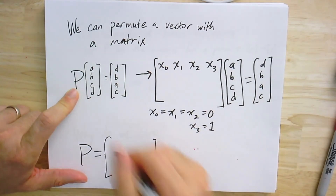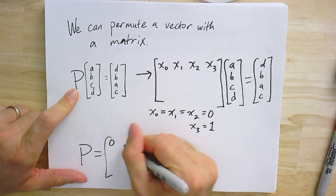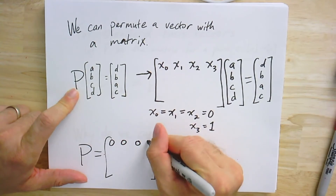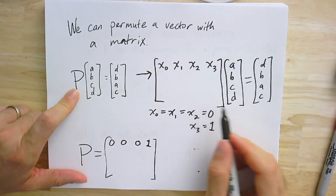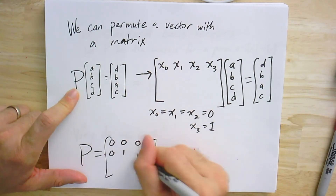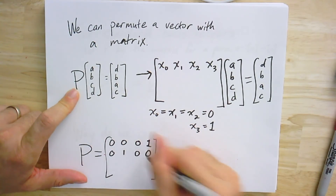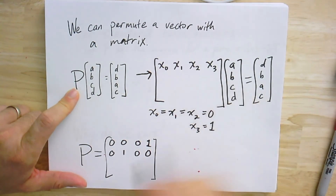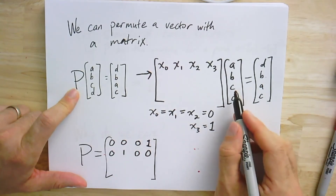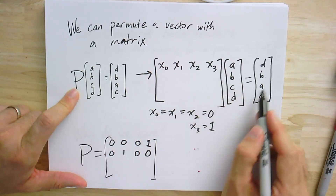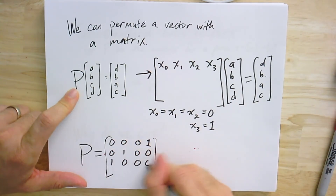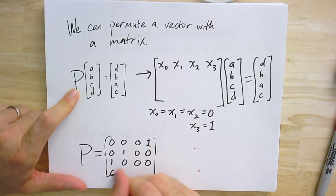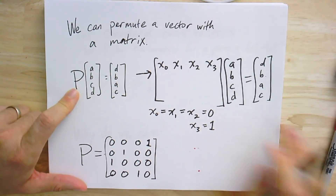If you follow the same logic for all rows, what you'll get is: the first row is what we just computed, the next row is 0, 1, 0, 0 — picking out b. The next row is 1, 0, 0, 0 — grabbing a. And the last one is 0, 0, 1, 0.